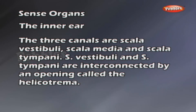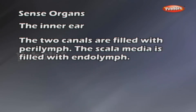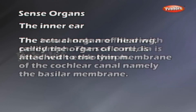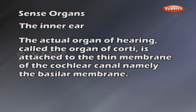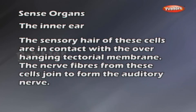The scala vestibuli and scala tympani are interconnected by an opening called the helicotrema. These two canals are filled with perilymph. The scala media is filled with endolymph. The actual organ of hearing, called the organ of Corti, is attached to the basilar membrane. The sensory hair cells are in contact with the overhanging tectorial membrane. The nerve fibres from these cells join to form the auditory nerve.